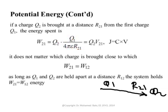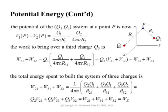Since r21 equals r12 — the distance between the two charges is the same regardless of direction — we are now set to bring a third charge q3. There is already work done to bring q2 because we brought it from infinity against the field of q1. The potential at any point in space is simply the sum of the potentials due to q1 and q2 by superposition. When we bring charge q3, we bring it from infinity to a location at distance r31 from q1 and r32 from q2.